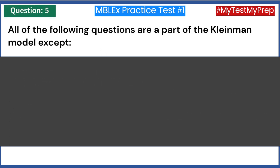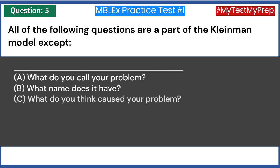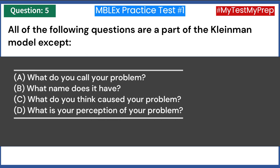All of the following questions are a part of the Kleinman model except: A) What do you call your problem? B) What name does it have? C) What do you think caused your problem? D) What is your perception of your problem? Answer: B — what name does it have.